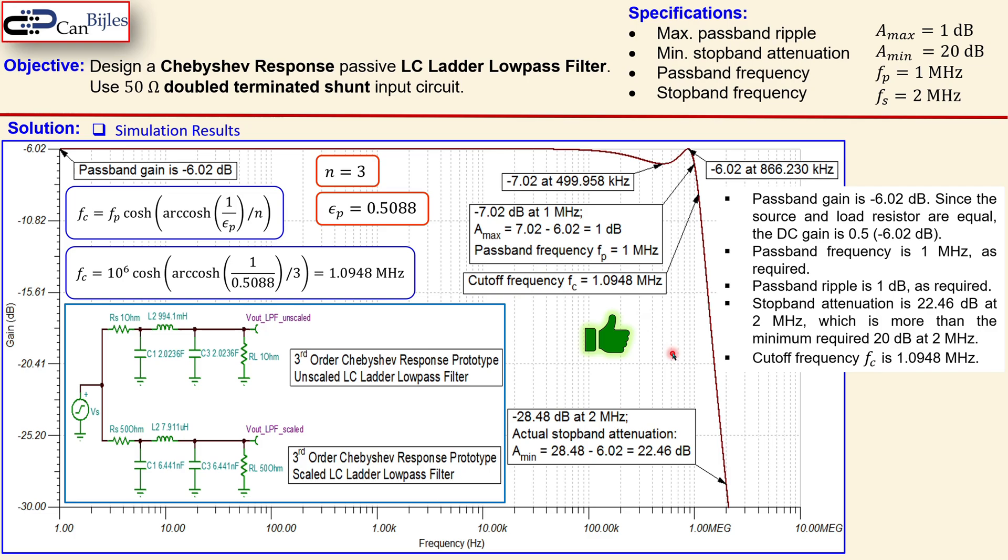All right guys this is our example number one about the Chebyshev response using the LC ladder configuration for this low pass filter circuit. If you have any questions or comments about this example please let me know and I will try to answer them as soon as possible. See you next time in another video. Take care.